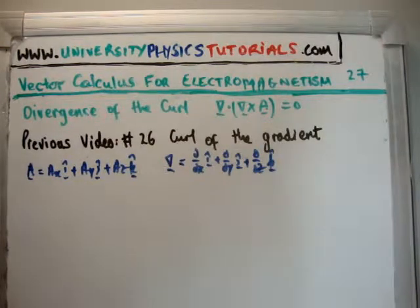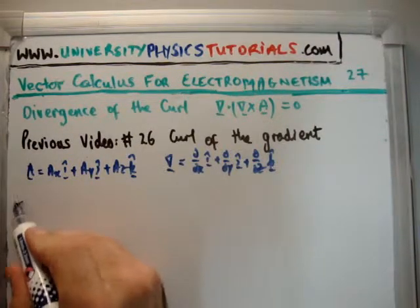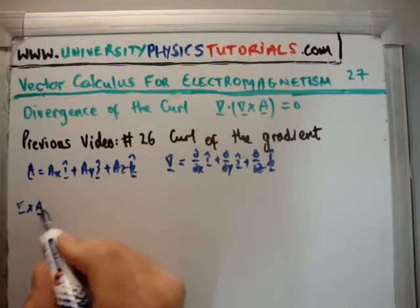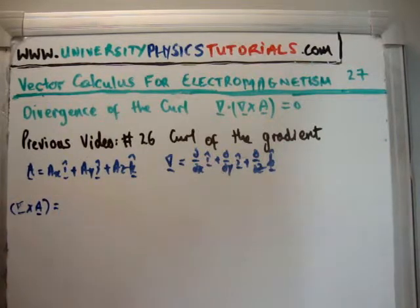Alright, so what I want to do next is take the curl of the vector field A. So I'm not going to insult your intelligence, and I'm just going to write down the answer for the curl of A. If you haven't done this before, look at video number 3, where the curl starts to do the cross product.